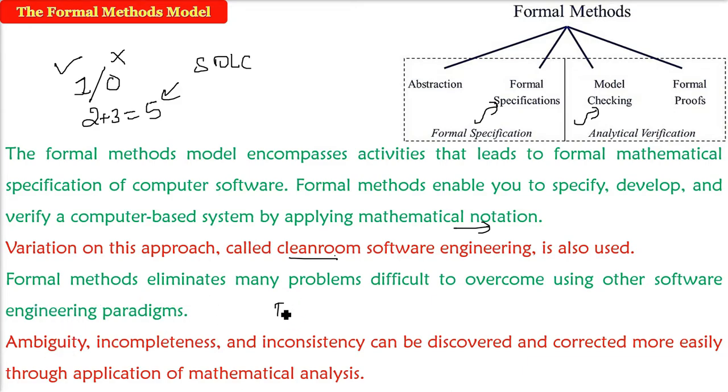As I said, if you're not understanding requirements or the user is saying something—the user is asking for Jupiter, you are giving Saturn. Ambiguity, incompleteness—sometimes you don't write it, sometimes the consistency is not there, somewhere it is different, other times it is different.